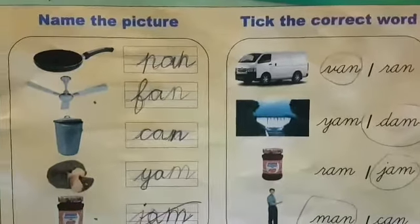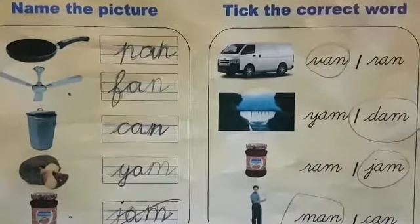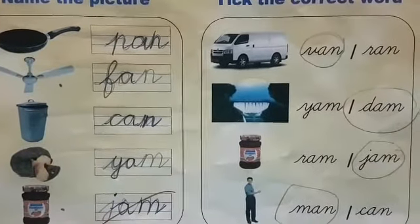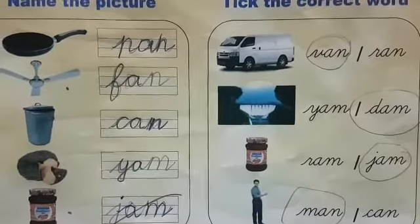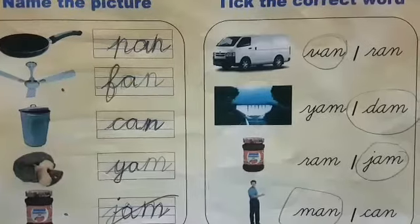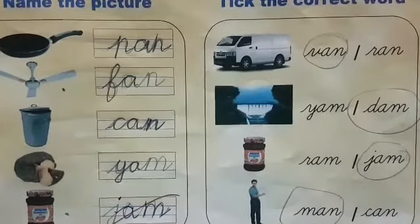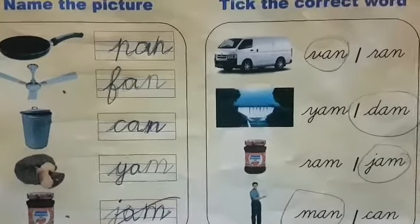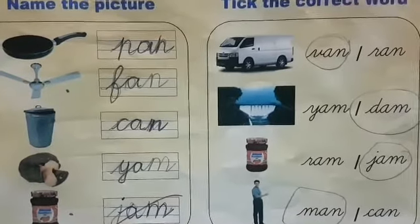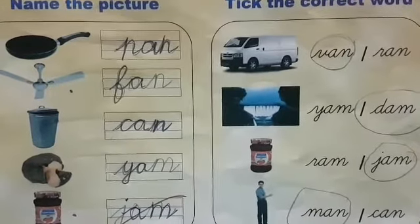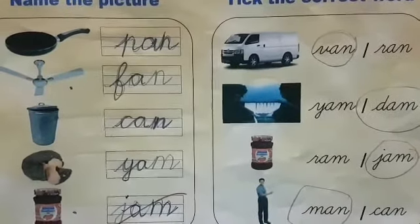Now we are going to see TICK THE CORRECT WORD. First picture is VAN. They have given two words: V A N and R A N. You have to circle the correct word — V A N, VAN.